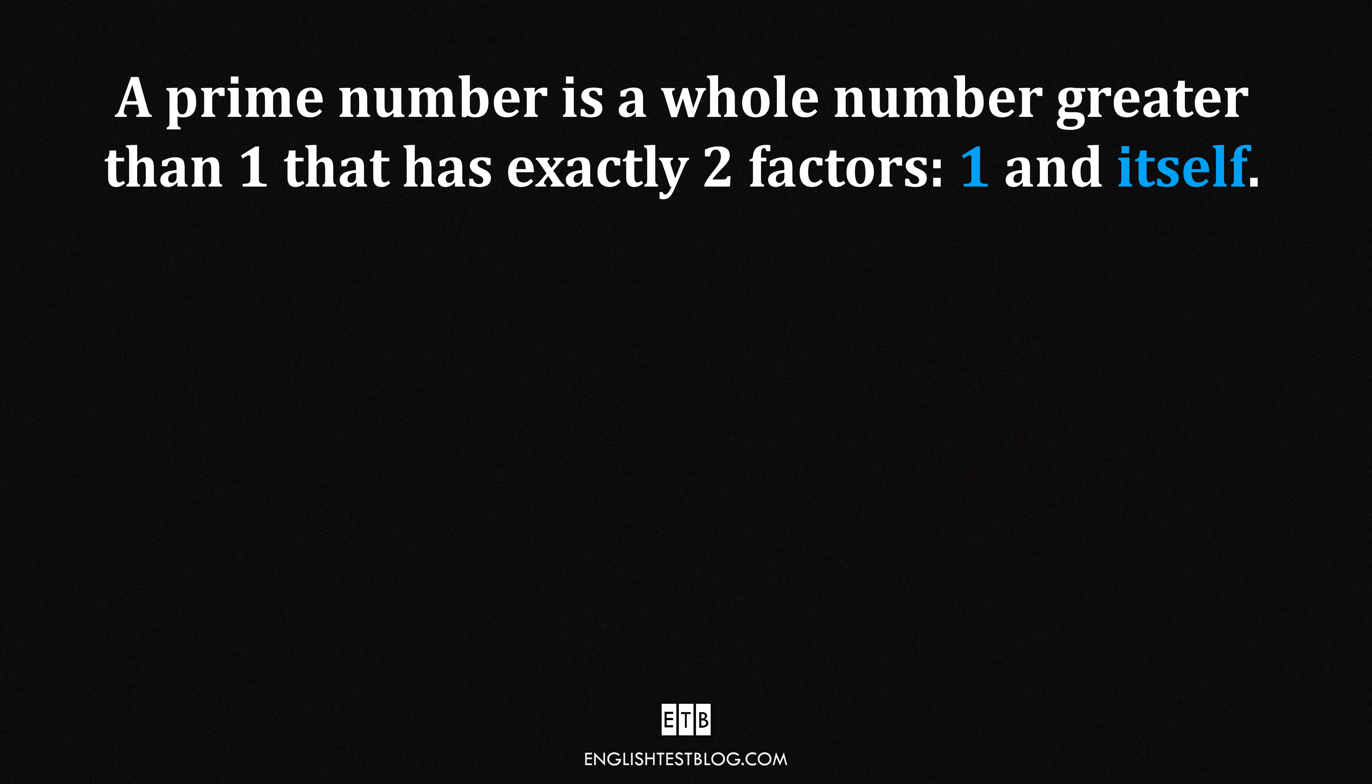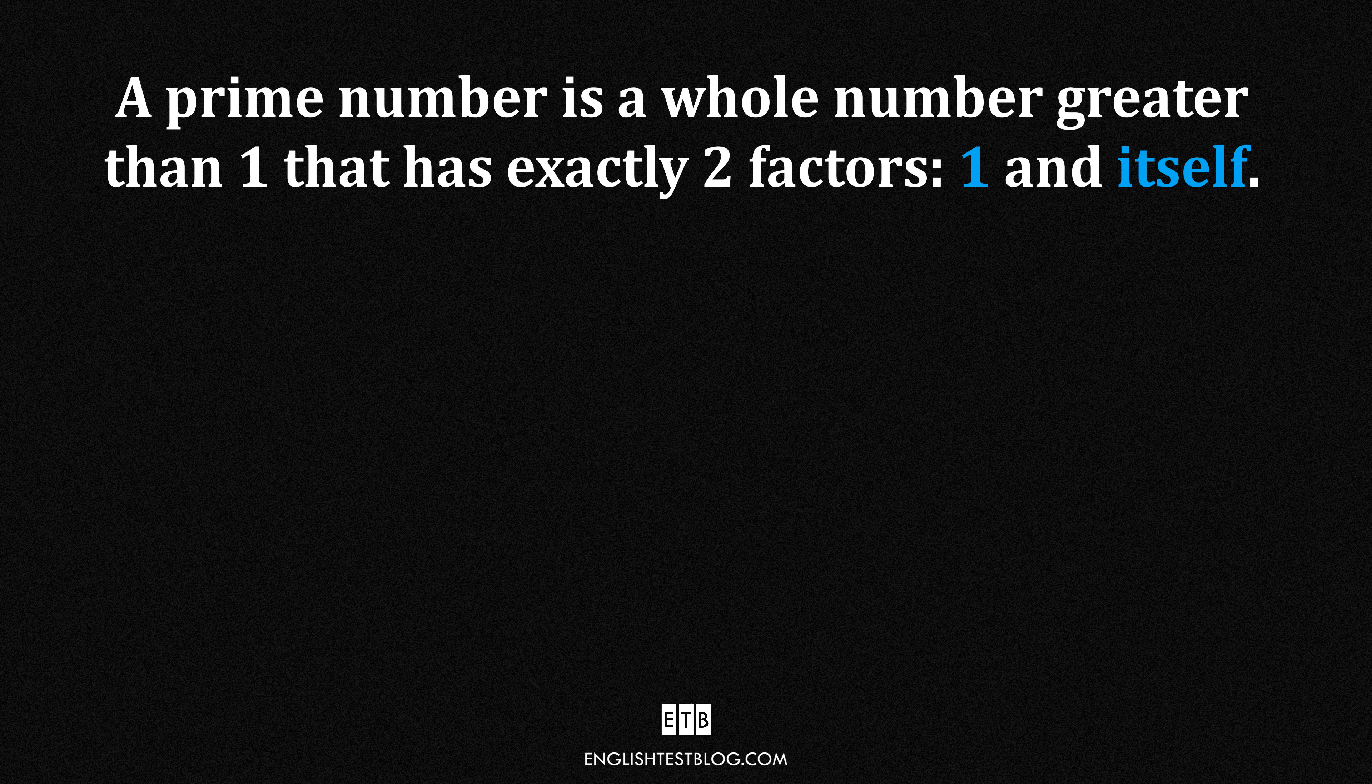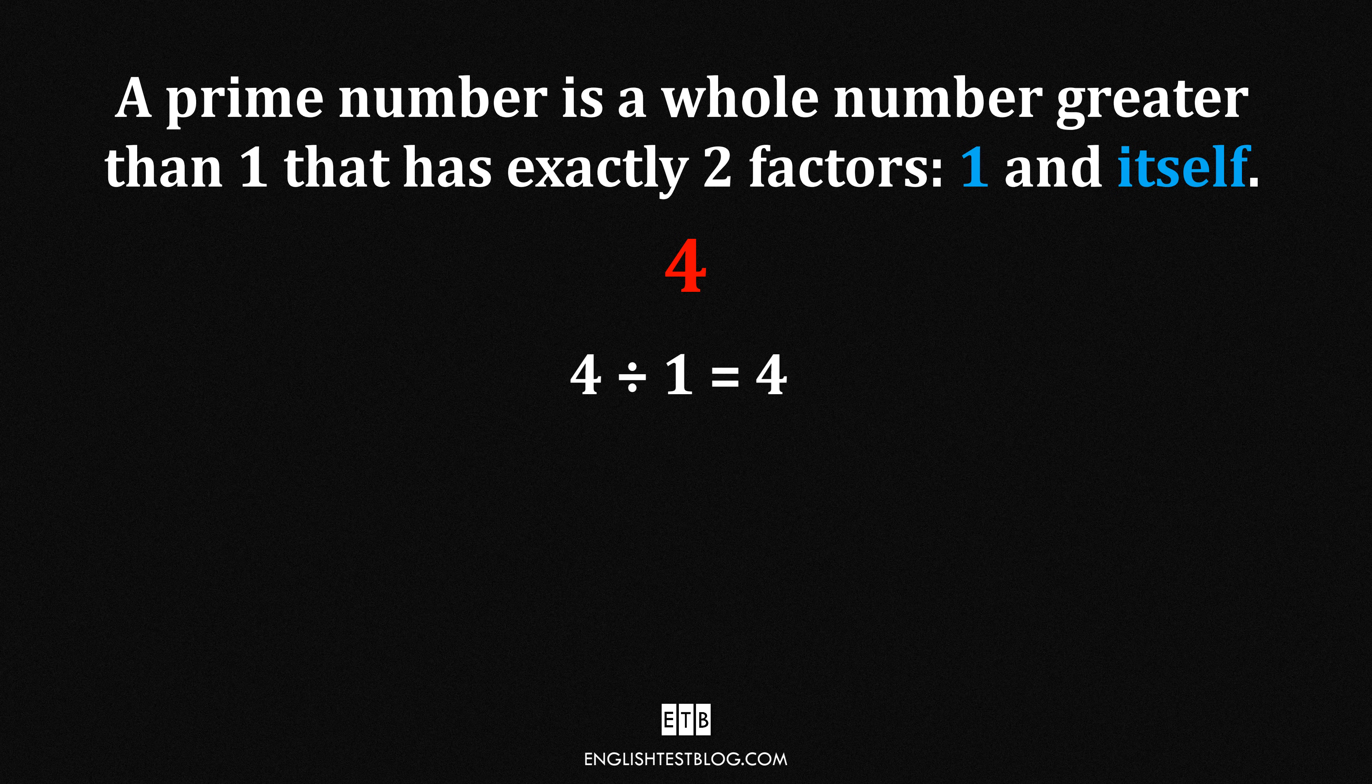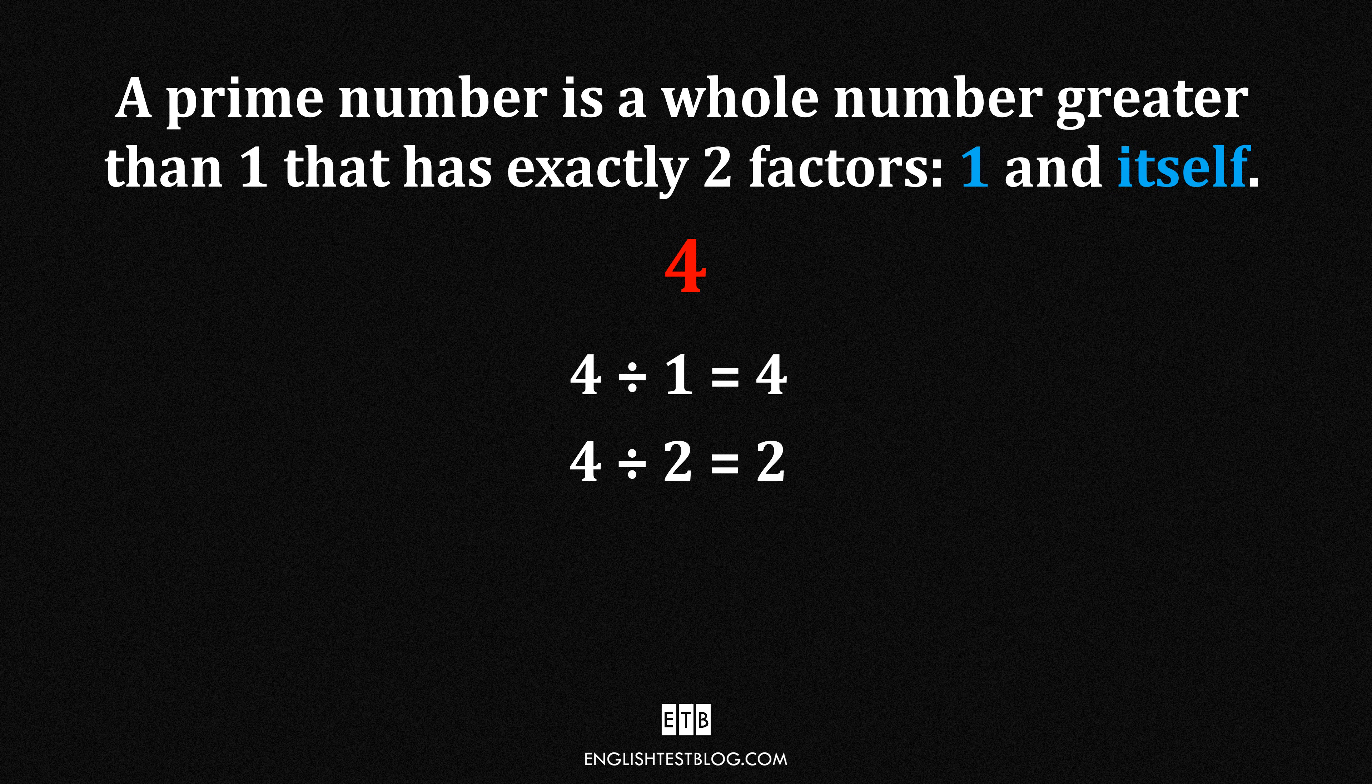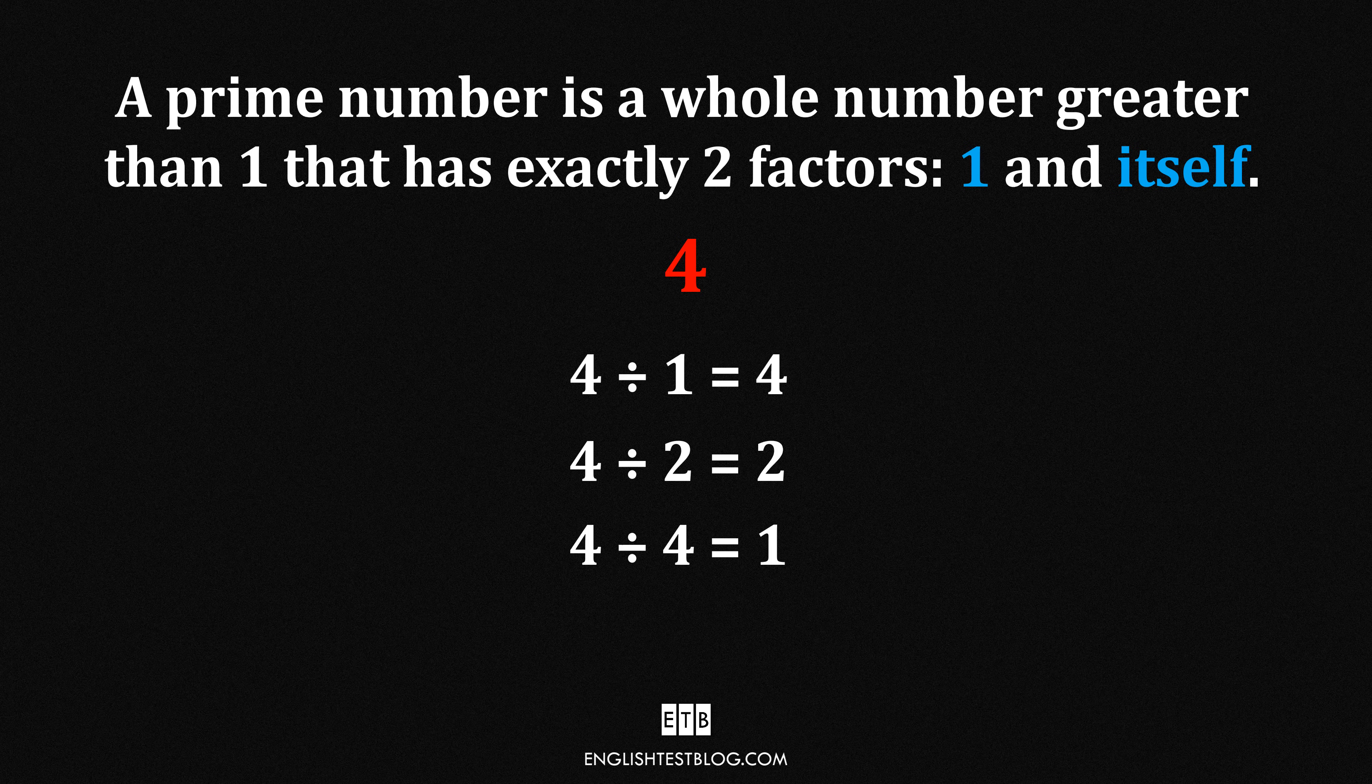Okay. Let's test a number that's not prime. Take 4. 4 divided by 1 equals 4. 4 divided by 2 equals 2. 4 divided by 4 equals 1. Wait a second. That's 3 factors. 1, 2, and 4. Since it has more than 2 factors, 4 is not a prime number. Numbers like this are called composite numbers.